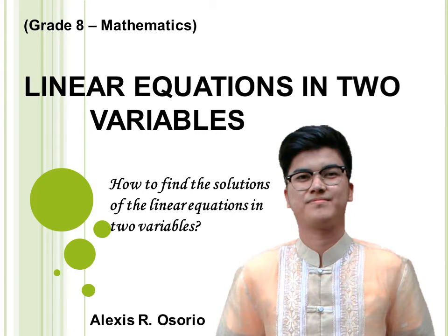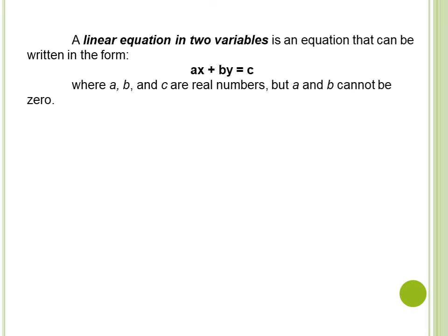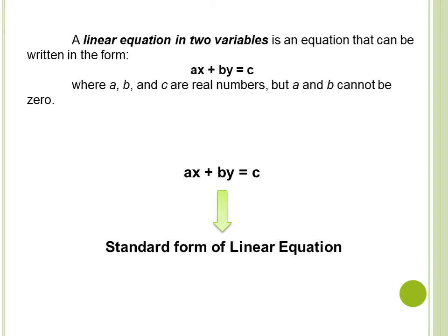In this lesson, we are going to learn how to find the solutions of the linear equations in two variables. A linear equation in two variables is an equation that can be written in the form ax plus by equals c, where a, b, and c are real numbers, but a and b cannot be zero. This ax plus by equals c is also known as the standard form of a linear equation. Don't forget this standard form because we can use it in our next lesson.